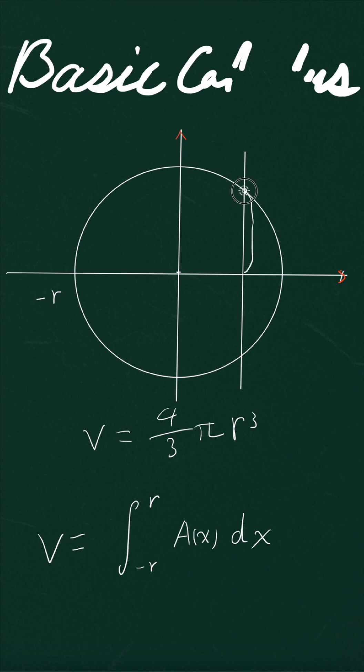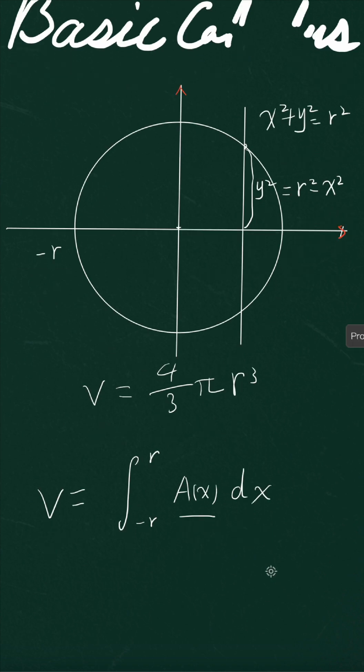The function of this point goes with the function of the big circle: x squared plus y squared equals r squared. We don't need to get y, only y squared. So y squared equals r squared minus x squared. We can plug y squared into the area A(x).